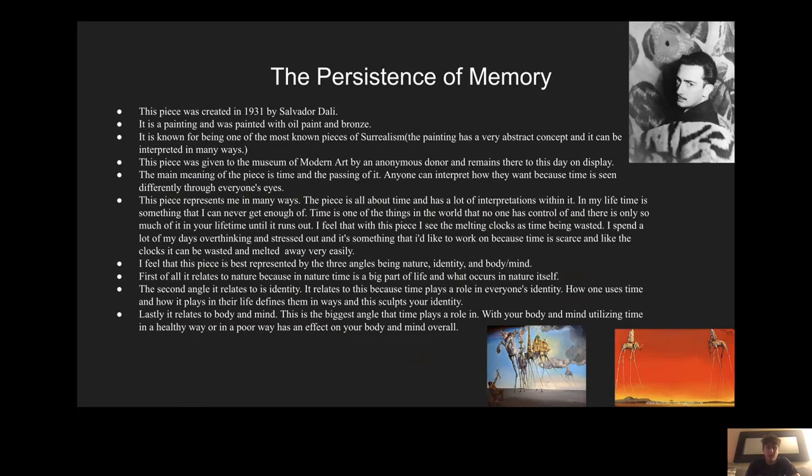Here's some background information on the Persistence of Memory itself. This piece was created in 1931 by Salvador Dali. It is a painting and was painted with oil paint and bronze. It is known for being one of the most known pieces of surrealism, and this means that the painting has a very abstract concept and it can be interpreted in many ways. This piece was given to the Museum of Modern Art by an anonymous donor and remains there to this day on display.